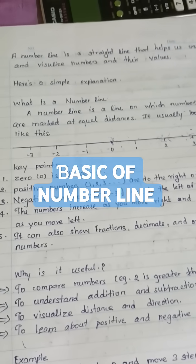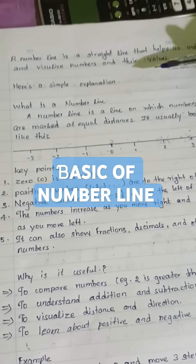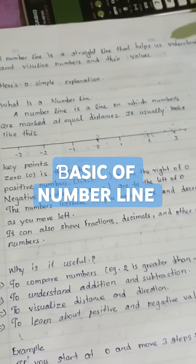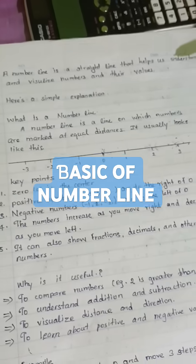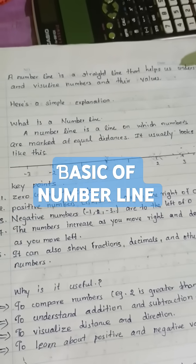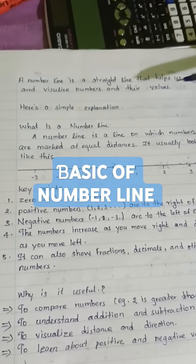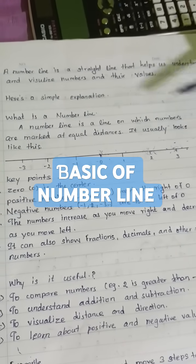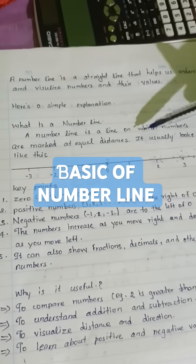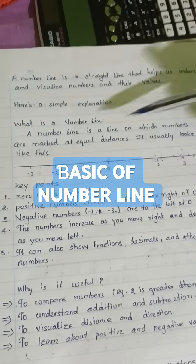A number line is a straight line that helps us understand and visualize numbers and their values. Here is a simple explanation: a number line is a line on which numbers are marked at equal distances. It usually looks like this.